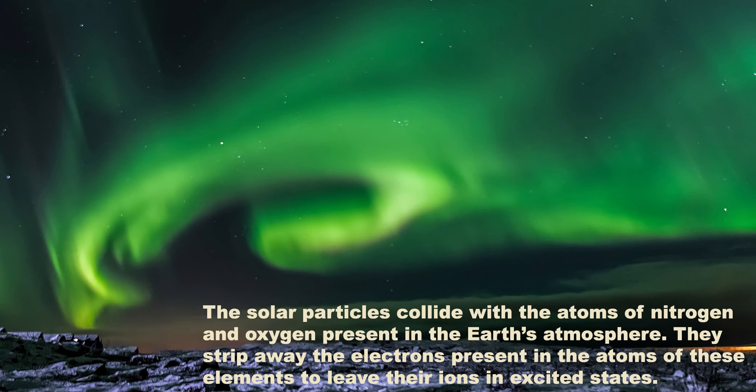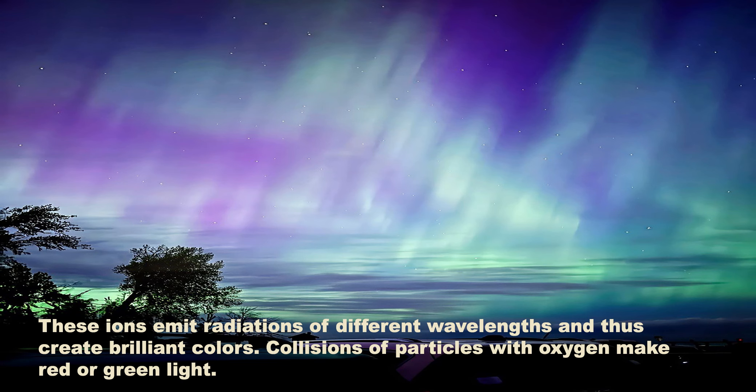The solar particles collide with the atoms of nitrogen and oxygen present in the Earth's atmosphere. They strip away the electrons present in the atoms of these elements to leave their ions in excited states. These ions emit radiations of different wavelengths and thus create brilliant colors.